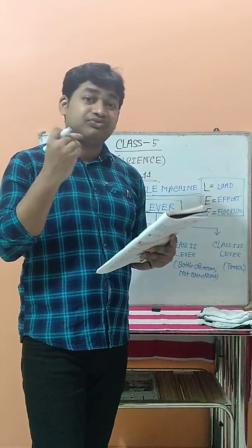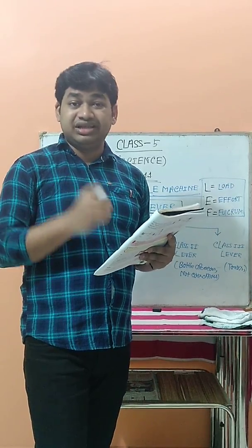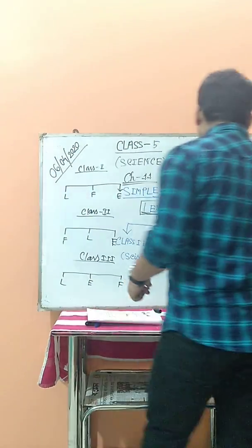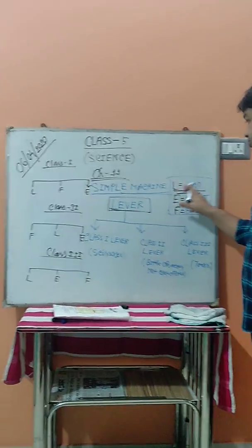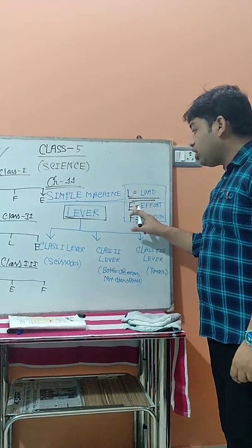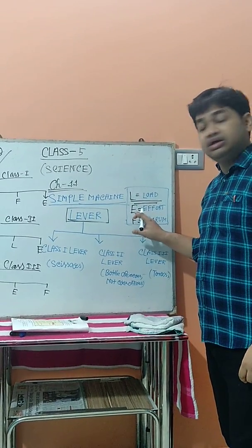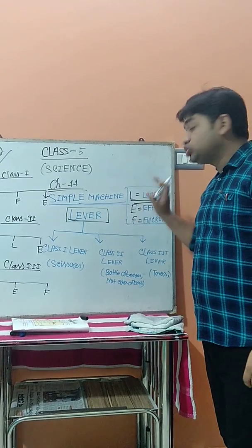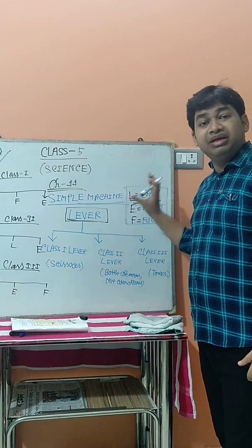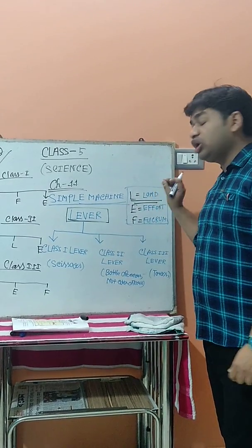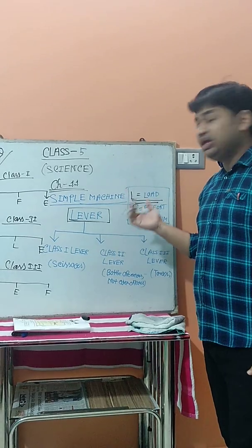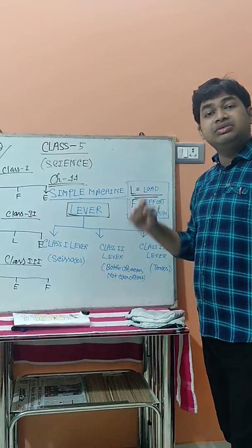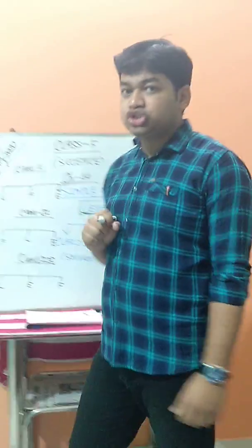The fulcrum is necessary, and there are three things that are very necessary for the lever. The first is the load, represented by L. The second is the effort, represented by E. The third is the fulcrum. These are the three main parts of a lever. The load means how much weight is present, the effort means how much force is applied, and the fulcrum maintains the balance between the two.